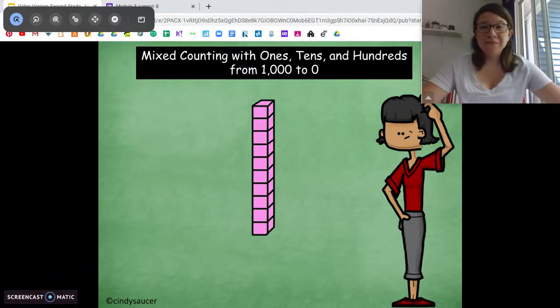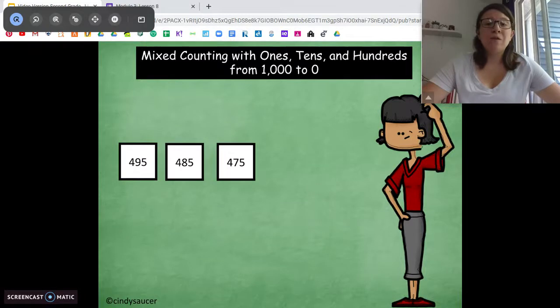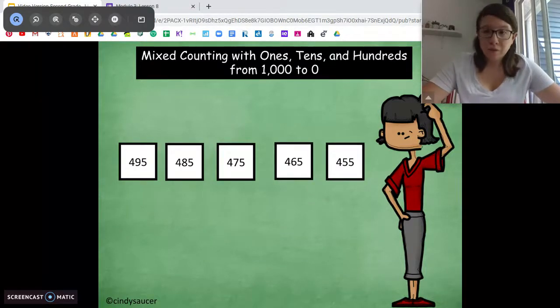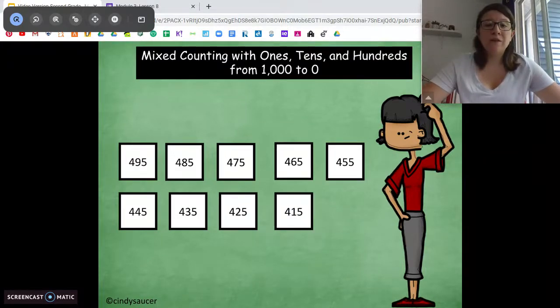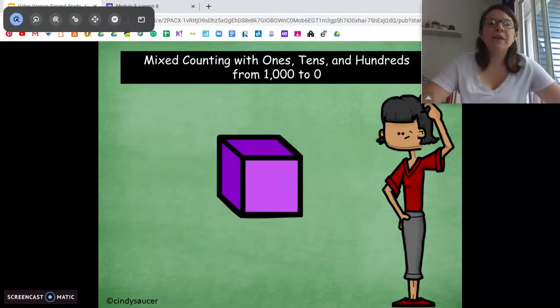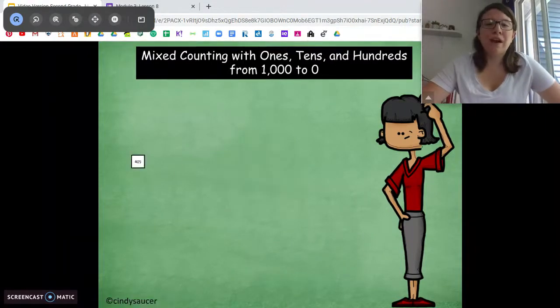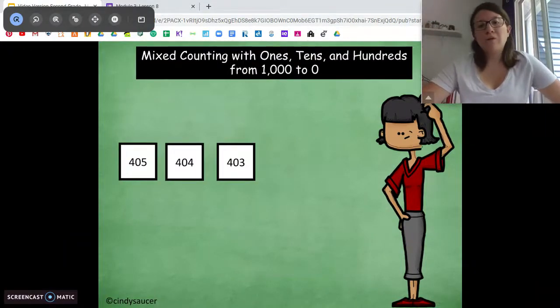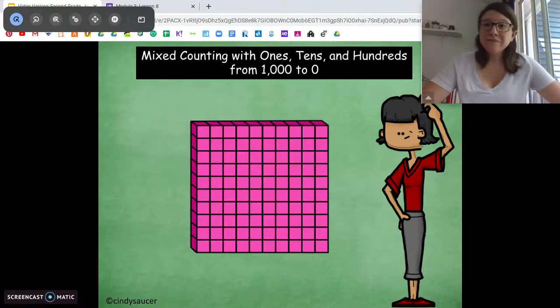Oh. Now what are we counting by? Tens. Starting at 495. 485, 475, 465, 455, 445, 435, 425, 415, 405. Now we're going to count by ones. Good. Starting at 405. 405, 404, 403, 402, 401, 400.